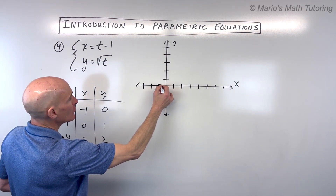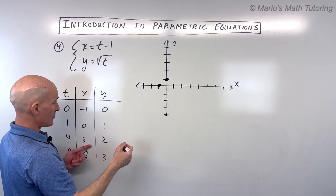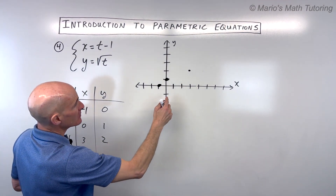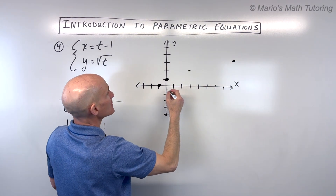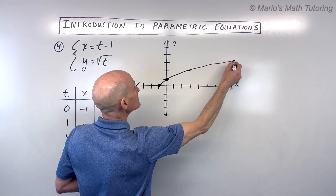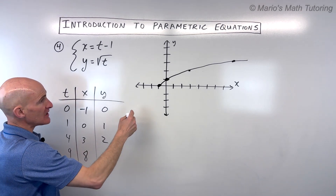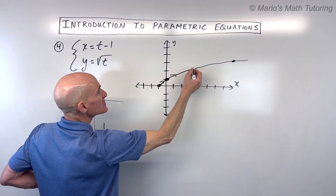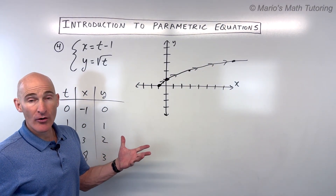Plotting these xy coordinates — negative one zero, zero one, three two, and eight three — we get a curve heading in this direction with increasing values of t, so we add arrows to indicate the orientation. To eliminate the parameter, we add one to both sides giving x plus one equals t. Substituting into the second equation gives y equals the square root of x plus one — a square root function shifted left one unit.